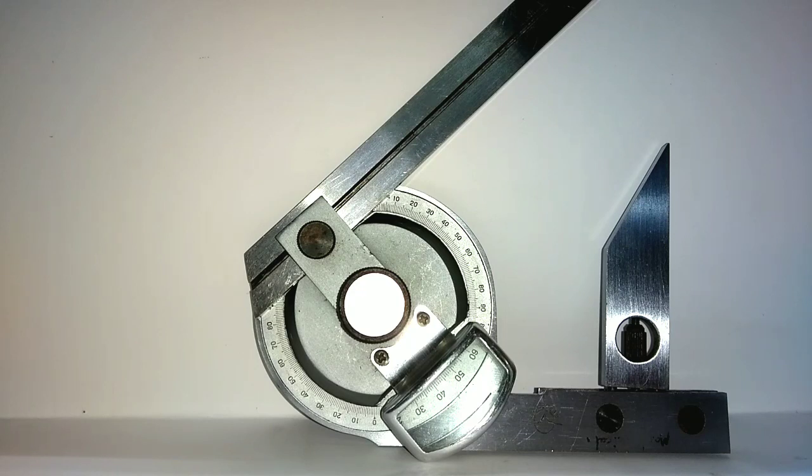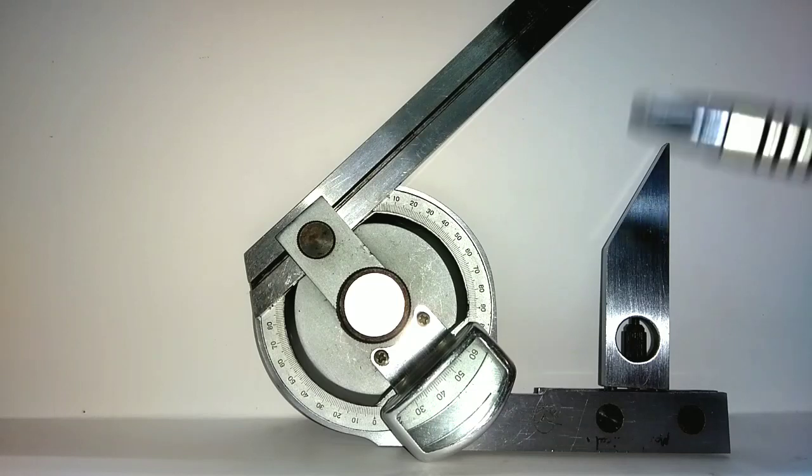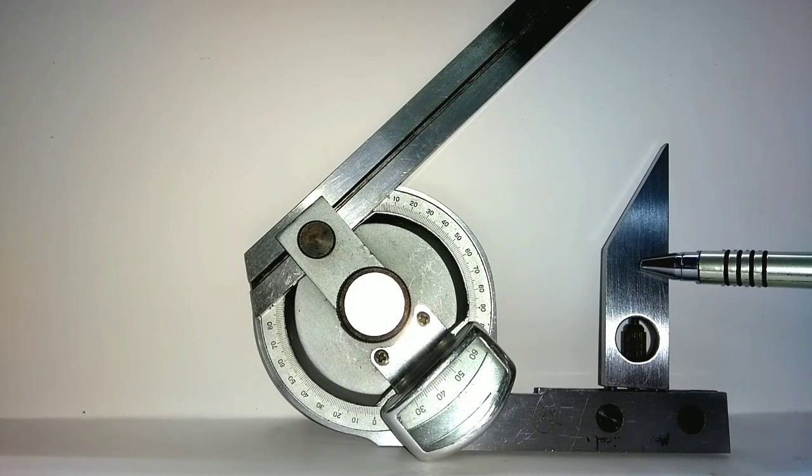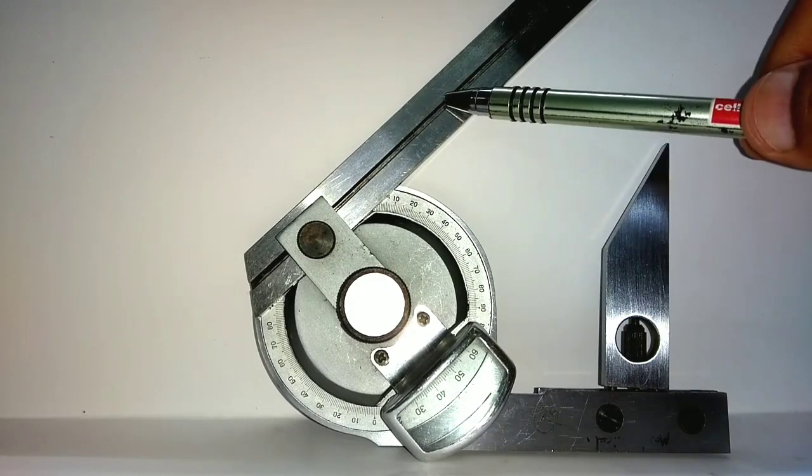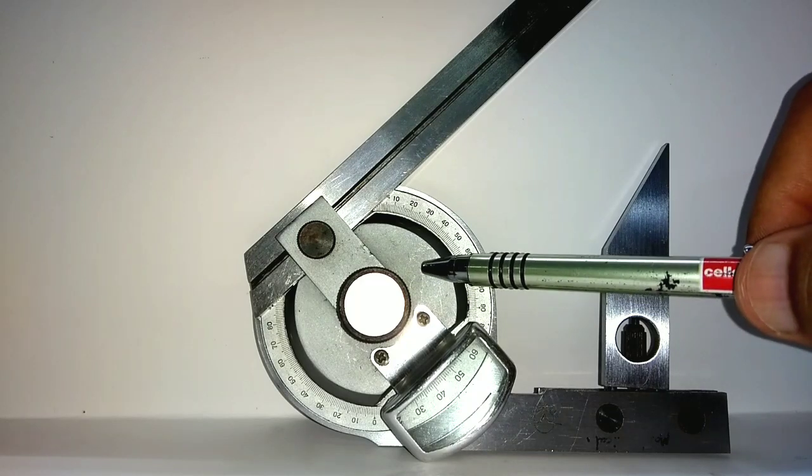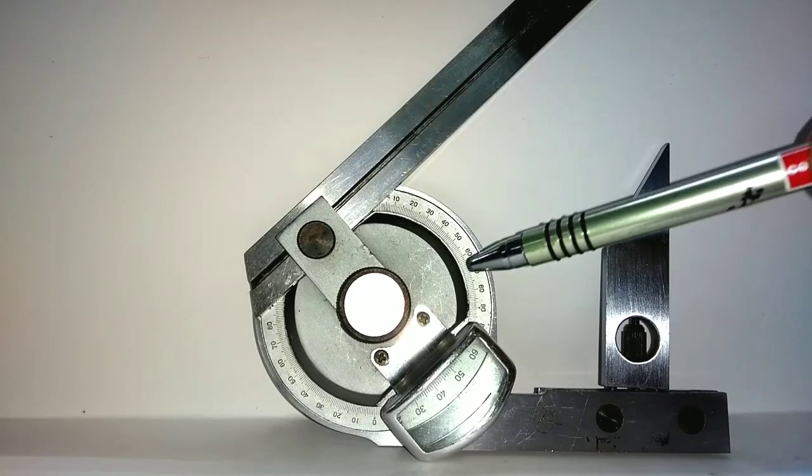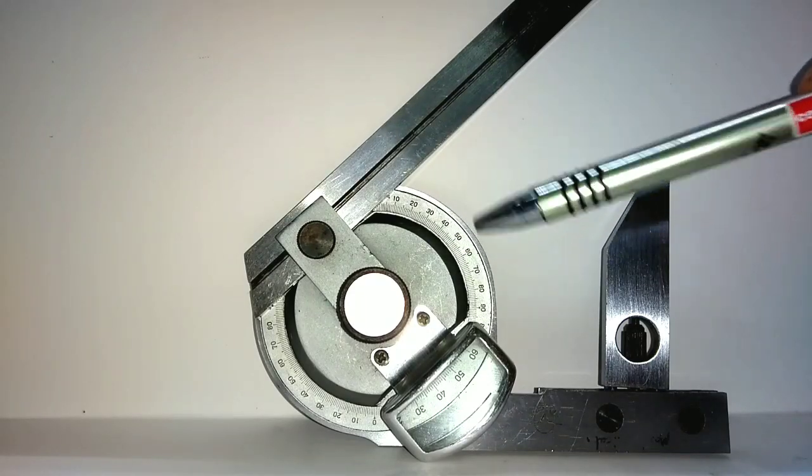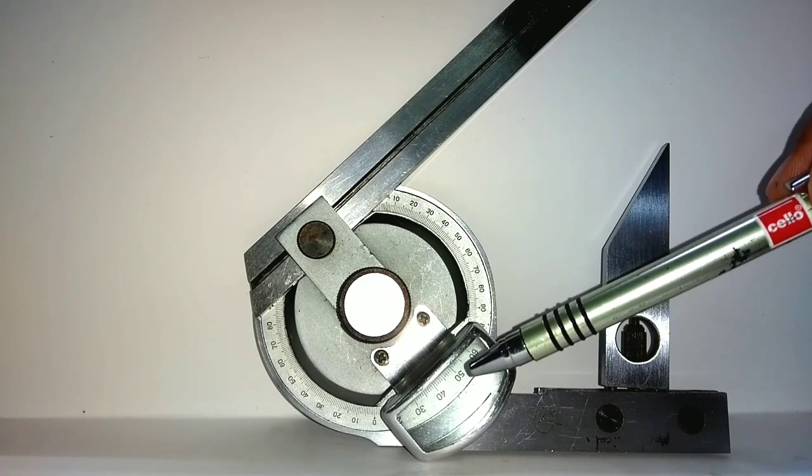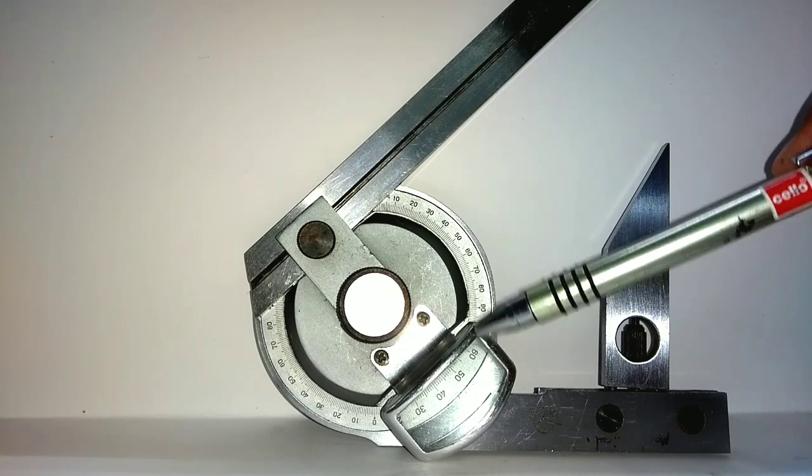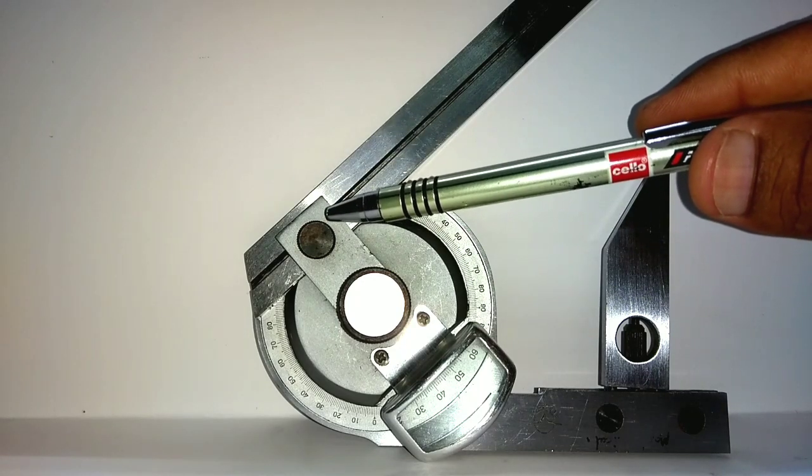Now as you can see from this instrument, it has various components like the body, working edge, acute angle attachment, blade, turret, slow motion device, main scale and vernier scale, and the magnifying glass is provided to get the correct reading of the vernier scale. This one over here is the blade locking nut.